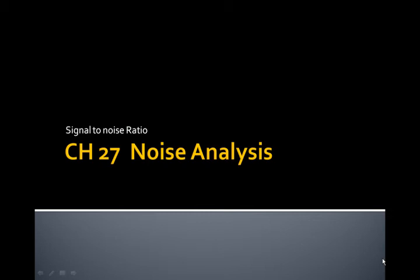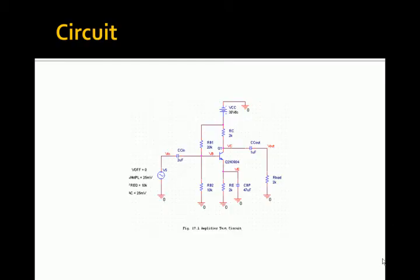Chapter 27: Noise Analysis and Signal-to-Noise Ratio. In this chapter we will study the noise generating devices in circuits, including resistors and semiconductor devices. Noise analysis tells the designer how noise from all devices will affect output signals.